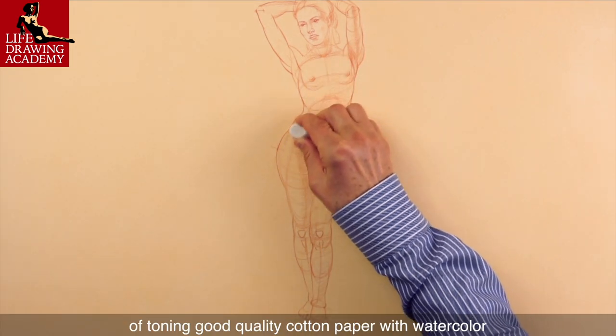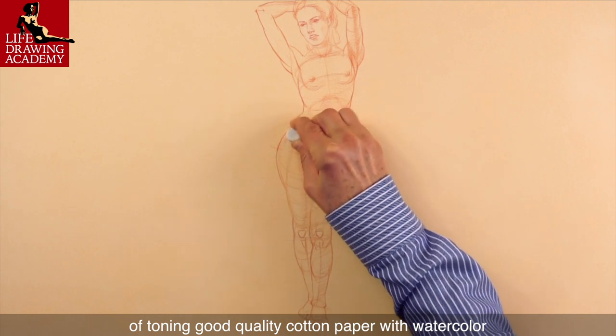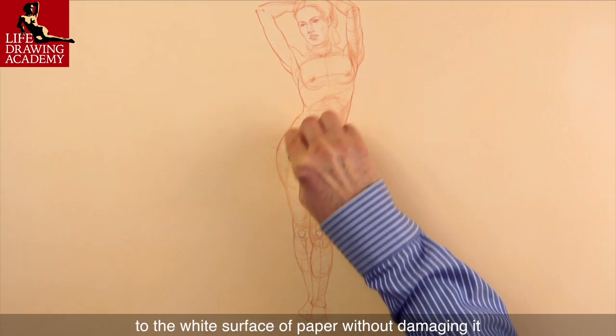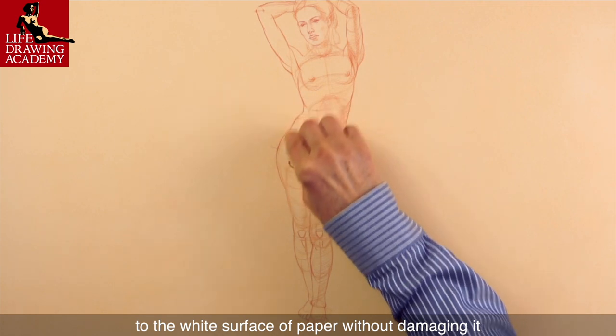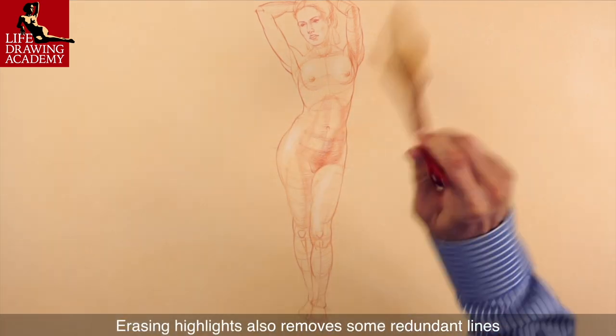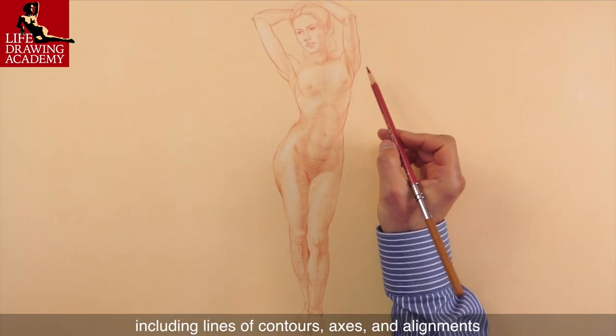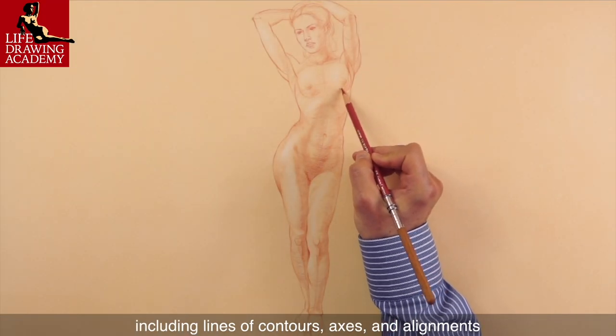One of the benefits of toning good quality cotton paper with watercolor is that I can now erase highlights with a rubber eraser to the white surface of paper without damaging it. Erasing highlights also removes some redundant lines of constructive drawing, including lines of contours, axes, and alignments.